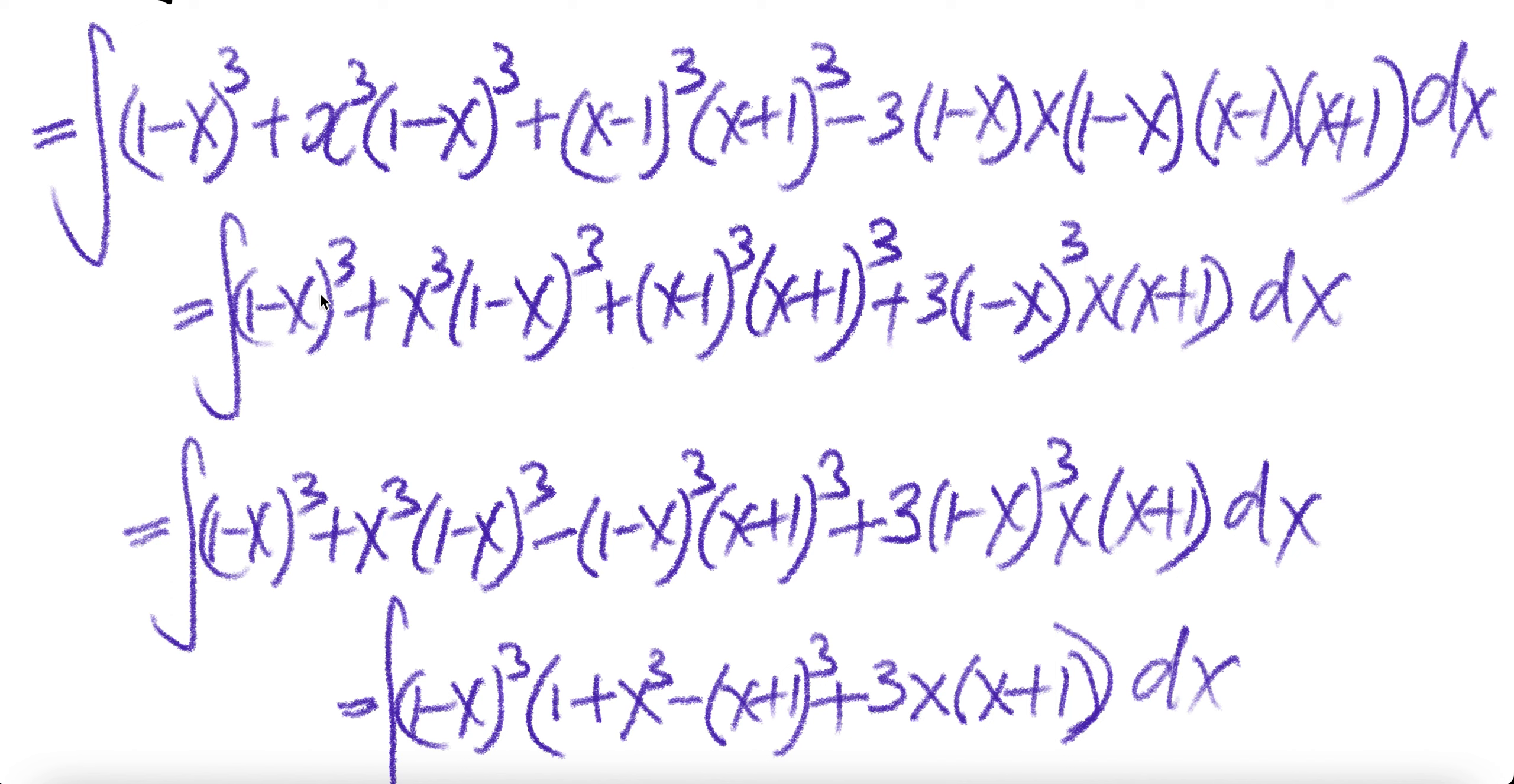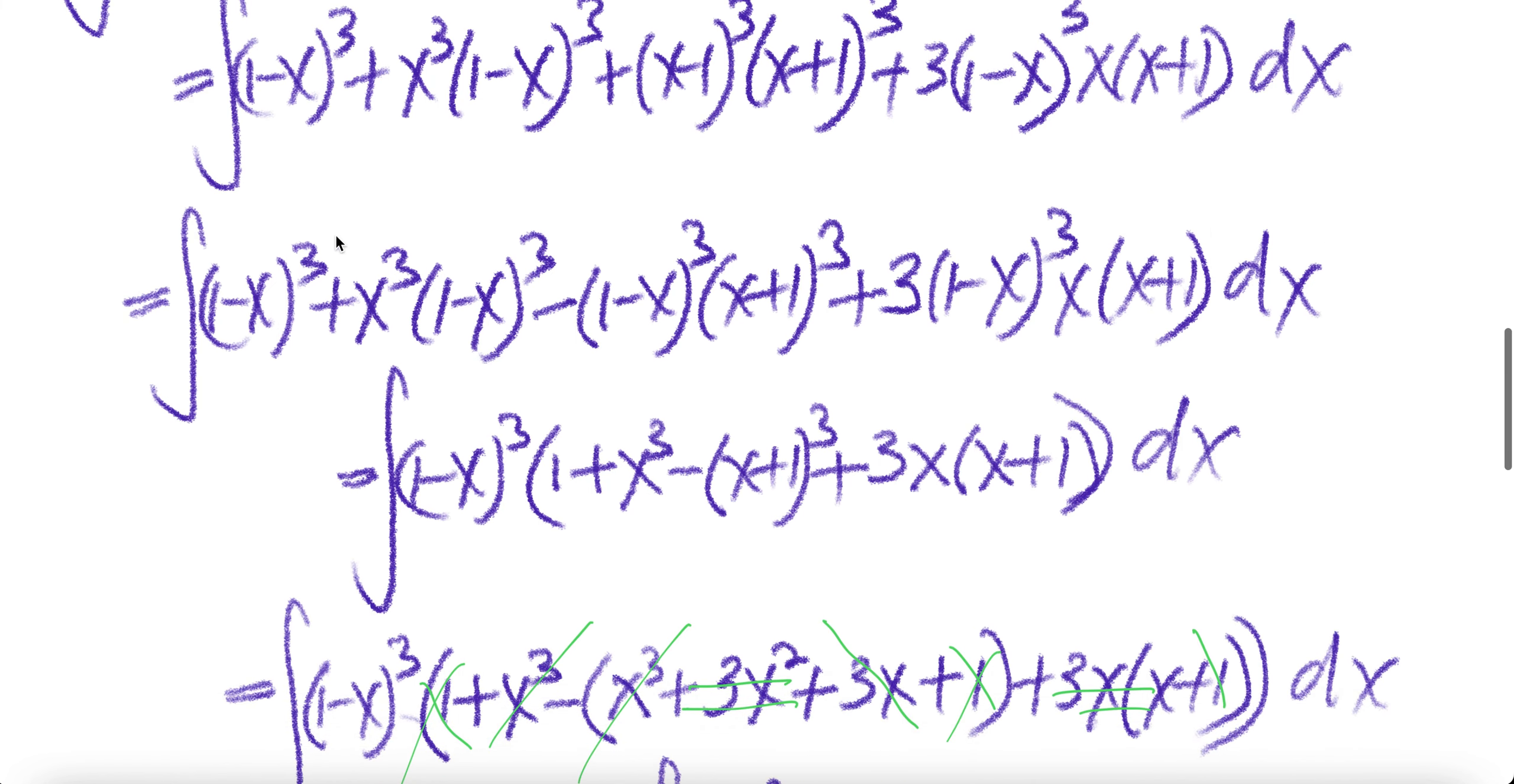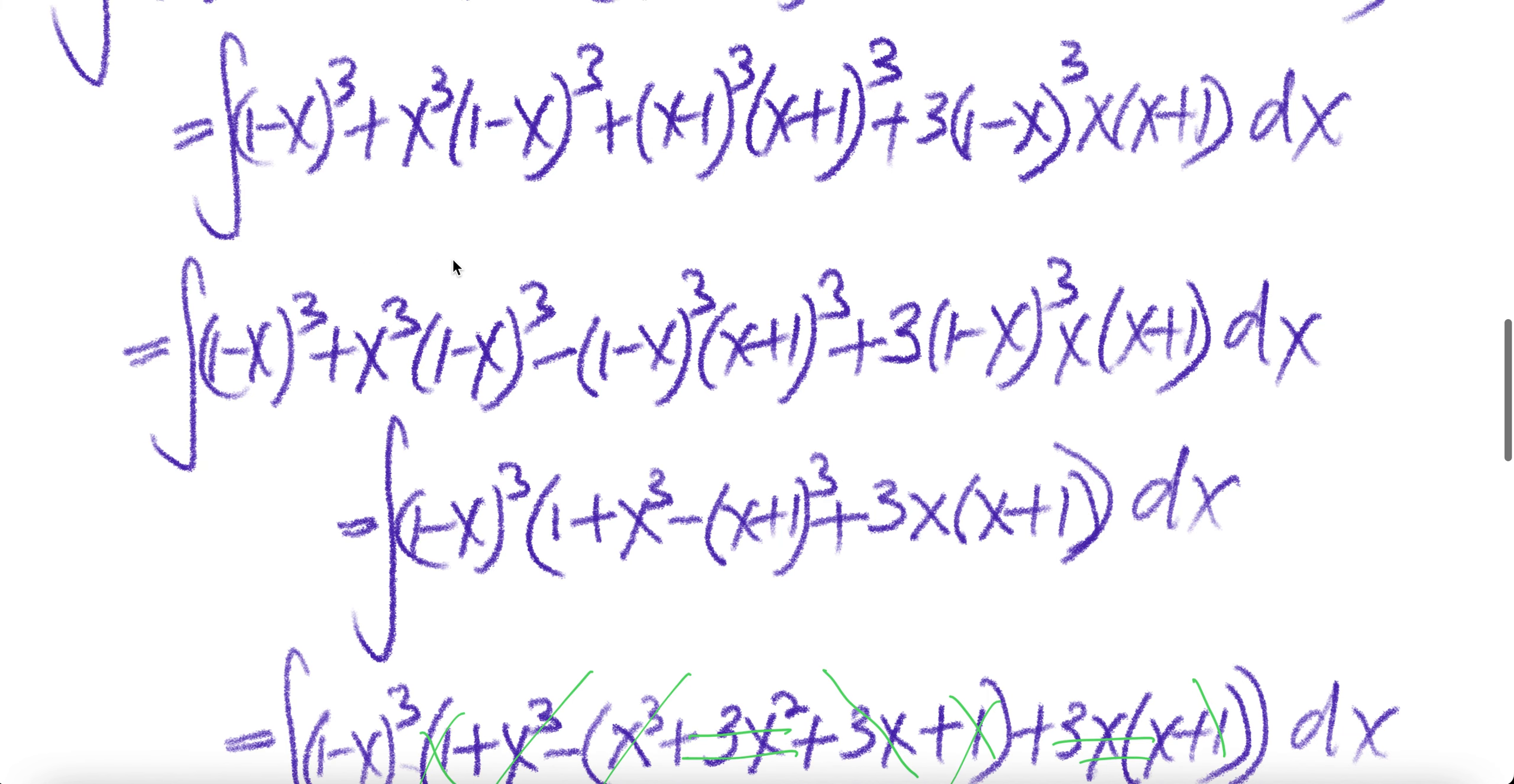Let us combine terms. You have (1-x)(1-x). Flip this, you get (1-x)³. That minus times this gives you plus, and then you have (x+1) here.